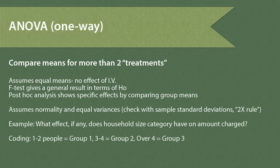The one-way ANOVA. ANOVA testing gives us a more powerful way to compare group means. While the two-sample T only compares two groups, the ANOVA test can compare more than two. It also assumes equal means — in other words, no effect of the independent variable on the dependent variable. The F-test for ANOVA gives a general result in terms of the null hypothesis, but it's the post-hoc analysis that shows us the specific effects by comparing the group means. ANOVA assumes normality and equal variances.